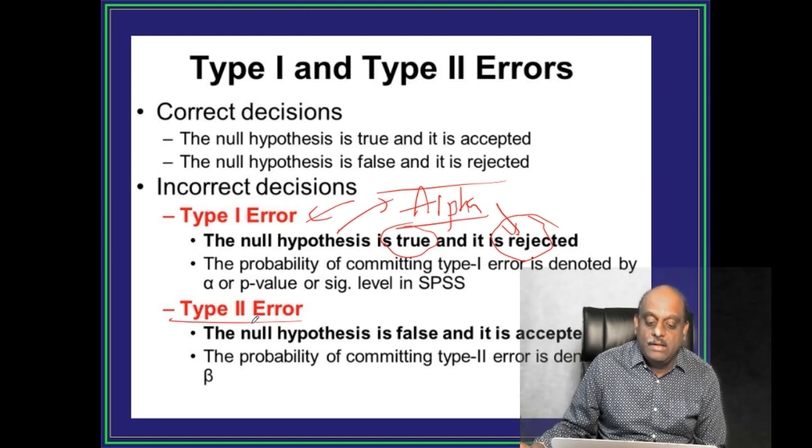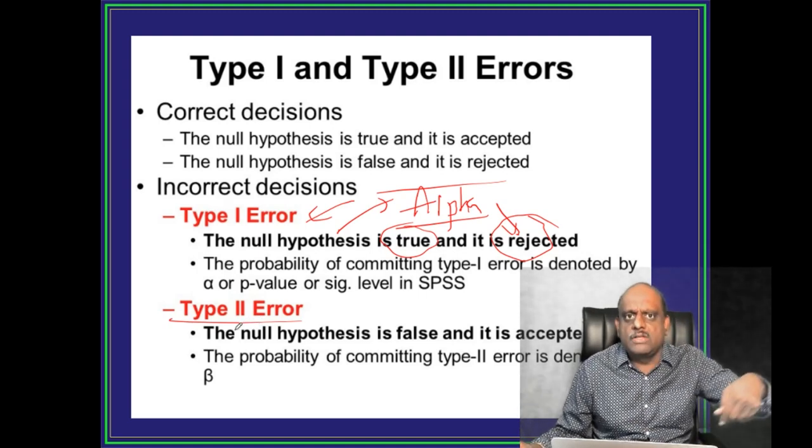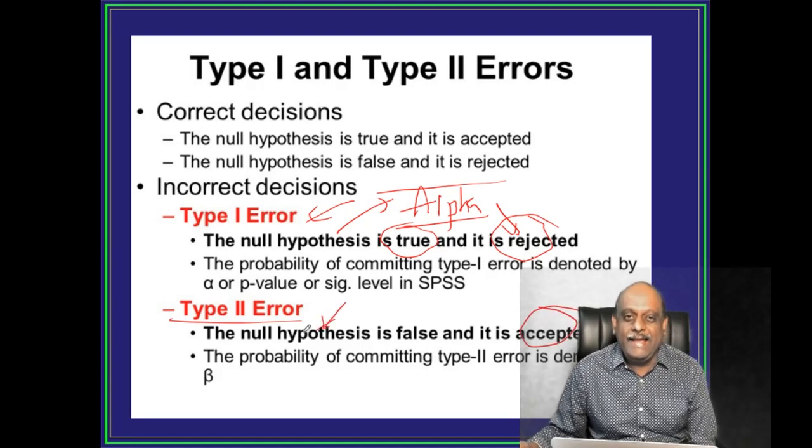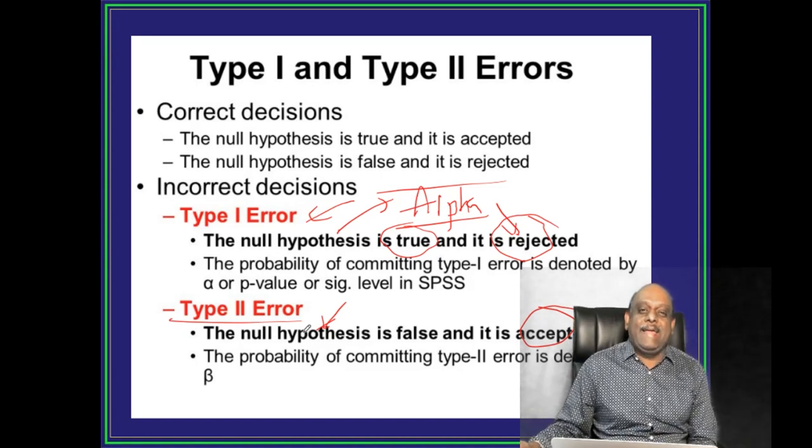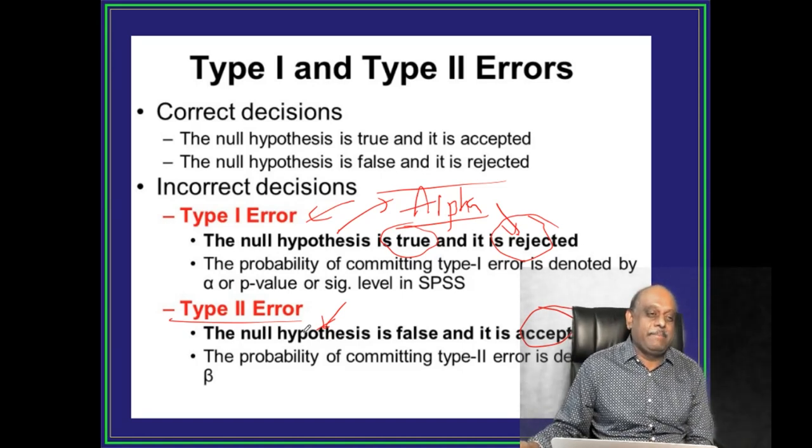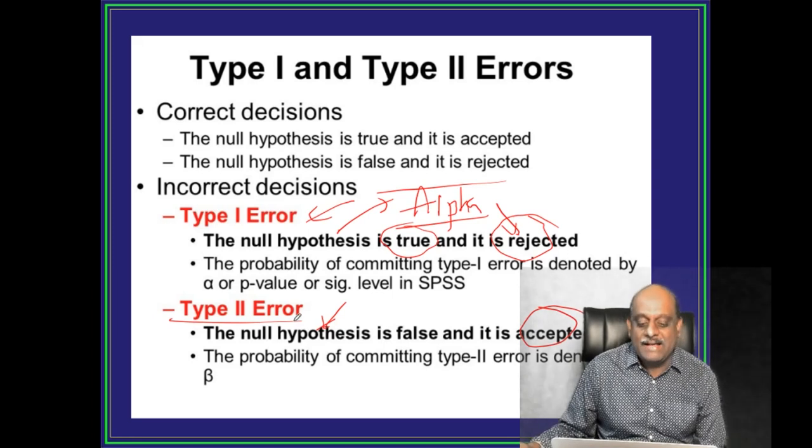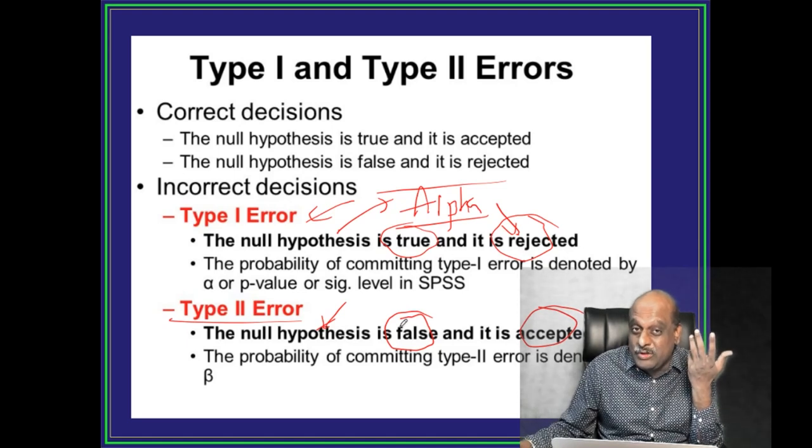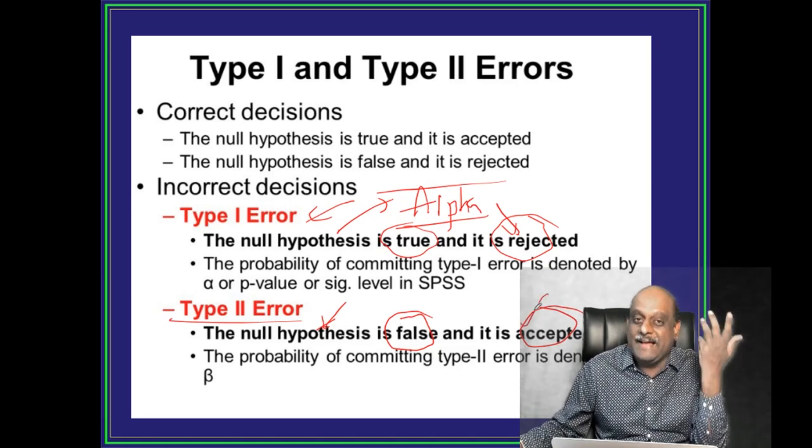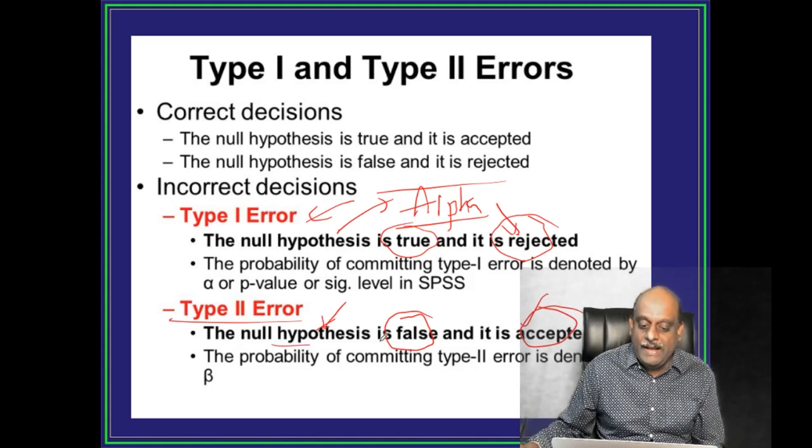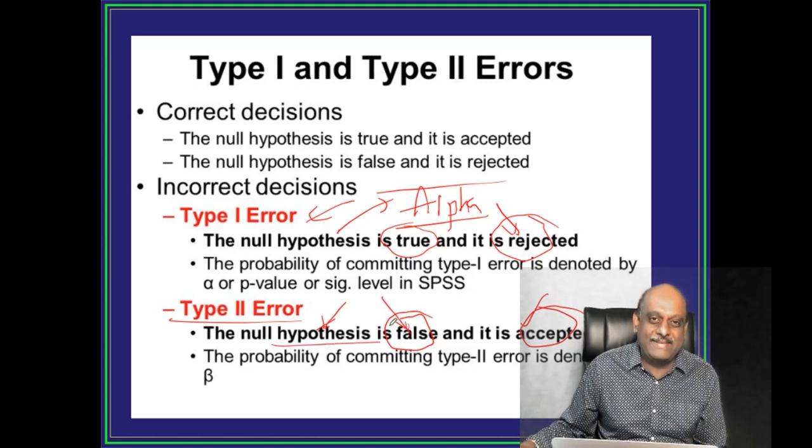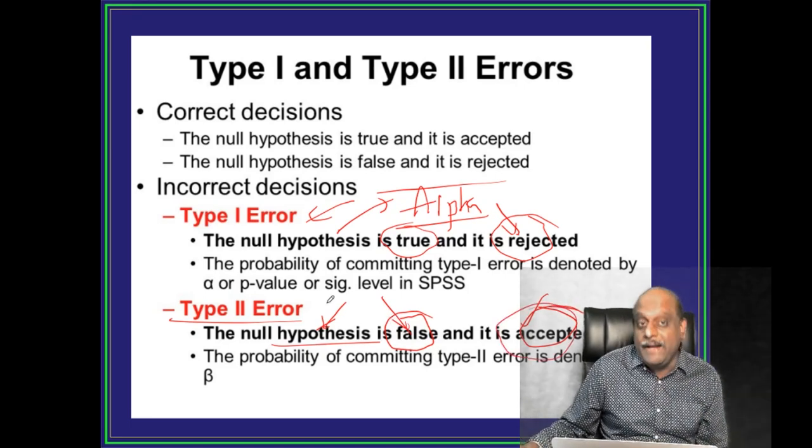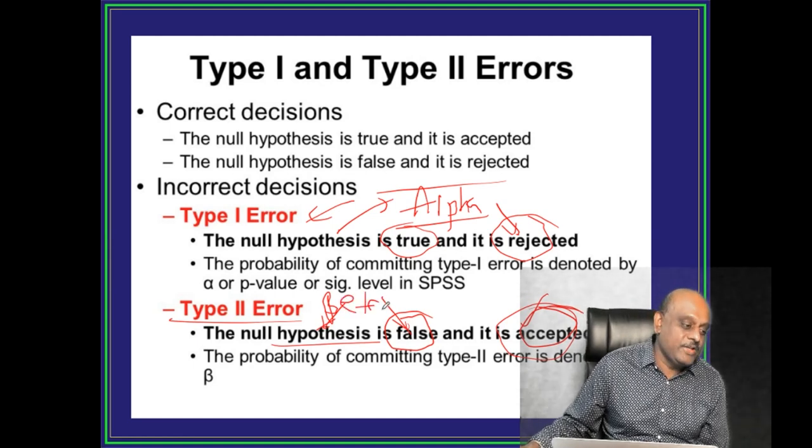Then what is Type II error? The Null Hypothesis is false but it is accepted. Duryodhan ne bola ki pura Raj mera hai Pandav, Pandav nakli hai mai asli huu that is false, magar blind king Dhritarashtra ne accept kiya. So the Null Hypothesis is lies, what Duryodhan was saying, phir bhi Dhritarashtra accept karna pada kyonki is blind, blind wata hai beta error, is what you need to remember.